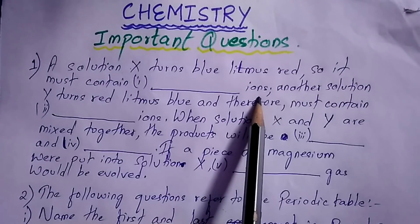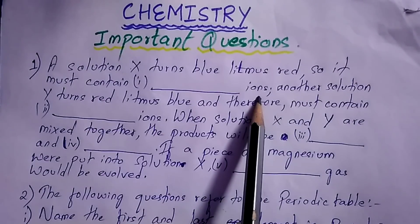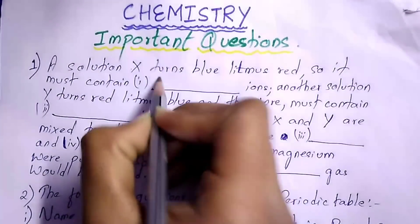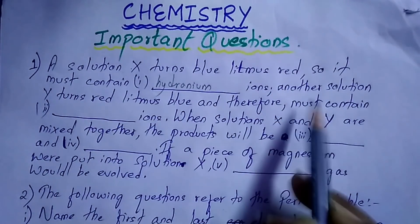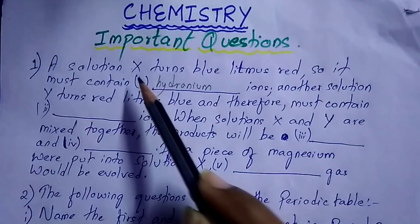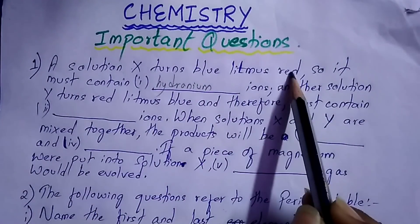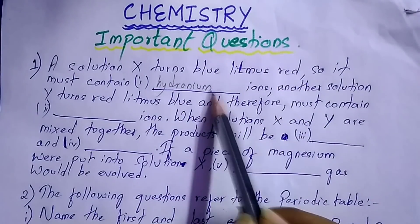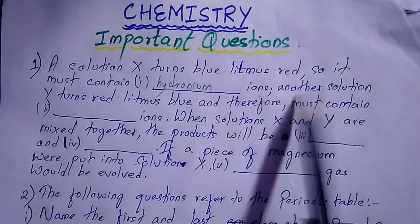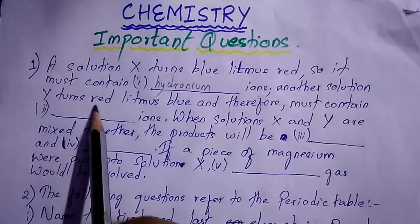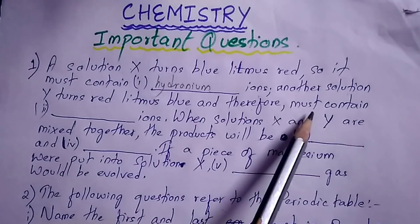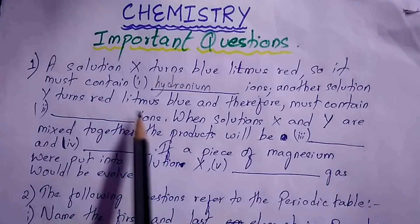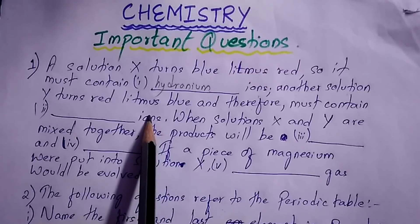A solution X turns blue litmus red, so it must contain hydronium ions. Another solution Y turns red litmus blue, and therefore it must contain hydroxide ions.